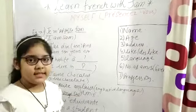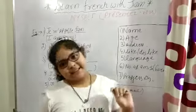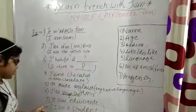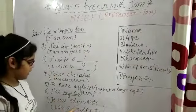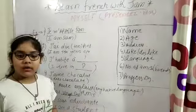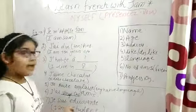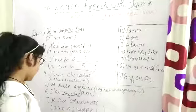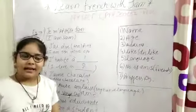J'ai vingt amis means I have twenty friends. Je suis étudiante means I am a student.